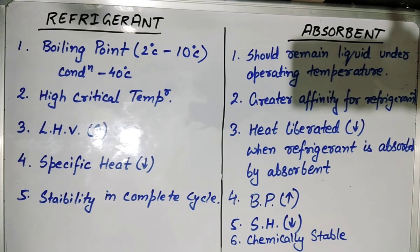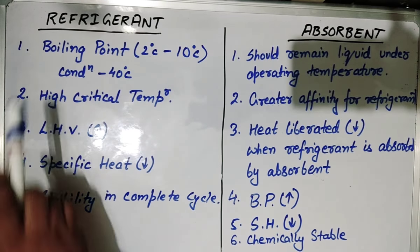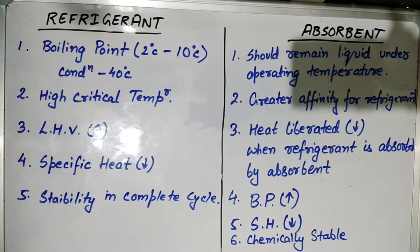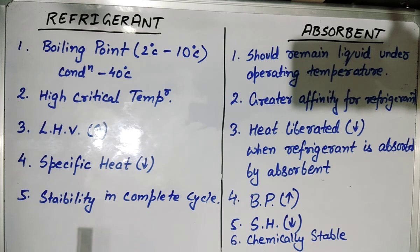The first thing is what is the selection criteria of a refrigerant? The first point is the boiling point. The boiling point of the refrigerant should be in the range of 2 degrees to 10 degrees Celsius at an operating condition of 40 degrees Celsius. That means it should have a low boiling point.